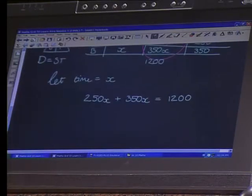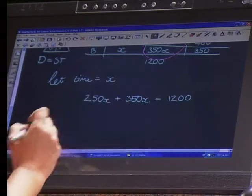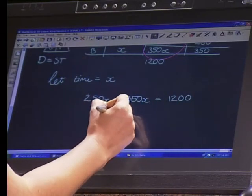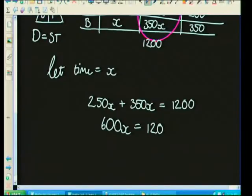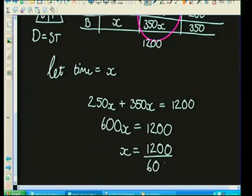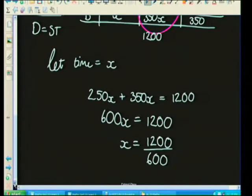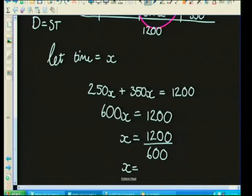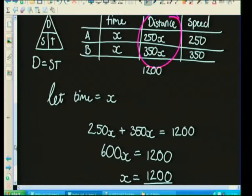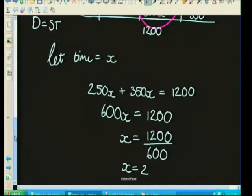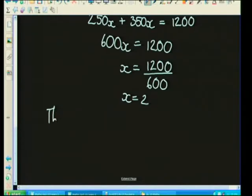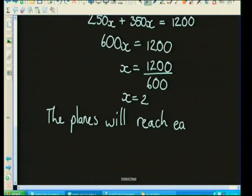Now it's pretty plain sailing. 250x plus 350x gives us 600x equals 1,200. Now to solve for x, we just need to divide. Can you see how we're flying through this problem? 1,200 divided by 600 gives us x equals 2. What was x meant to be? It was meant to be the time, and all of our time measurements are in hours. That means the planes will reach each other after flying for 2 hours.